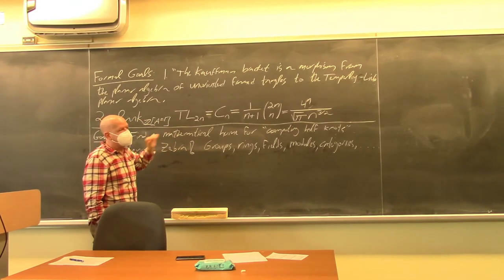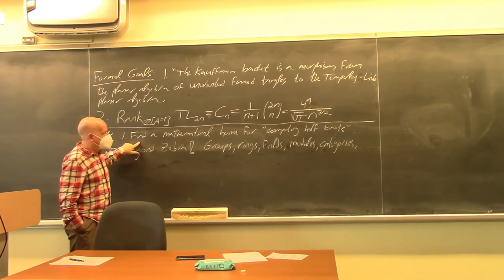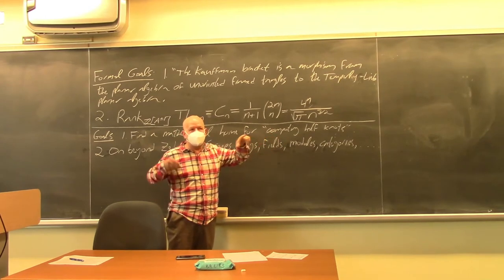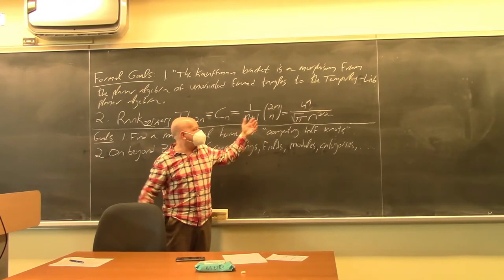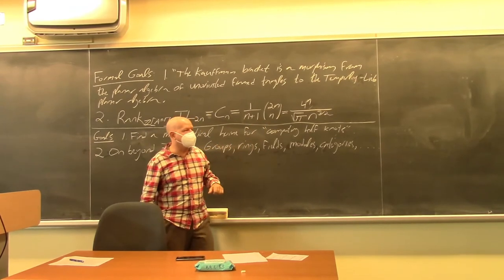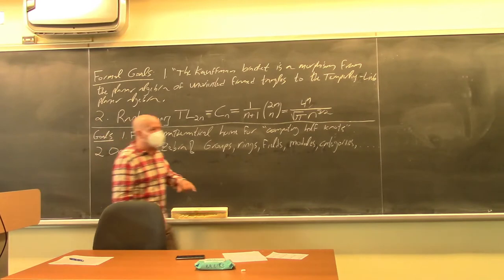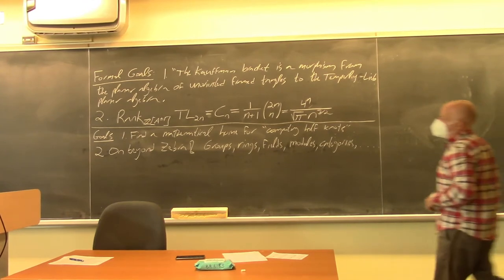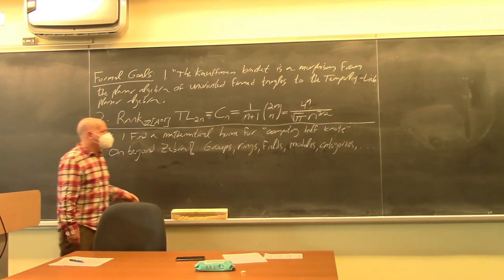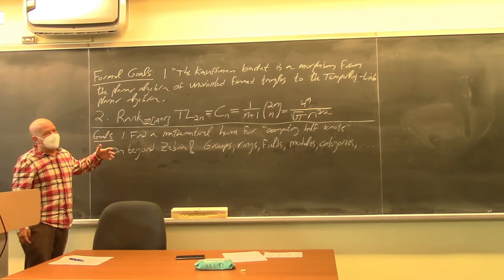This will be the mathematical home for what we did last time. Last time I said let's compute half a knot, and that seemed like a computational hack, but this gives a home for it. There's a handout — can you pass it around? The second informal goal is to tell you that knot theory somehow ends up leading you to study many strange mathematical structures.